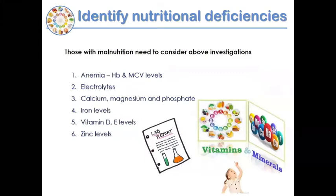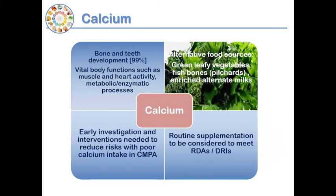When eliminating dairy, alternative calcium sources include green leafy vegetables, fish bones, and enriched alternative milks — though very large amounts of broccoli or spinach are needed to meet calcium needs, so supplementation may be necessary. Vitamin D comes from dairy and eggs, plays many important roles in the body, and supplementation should be considered if needed. Plant-based milks vary in calcium and vitamin D content, so adequate volumes must be ensured.